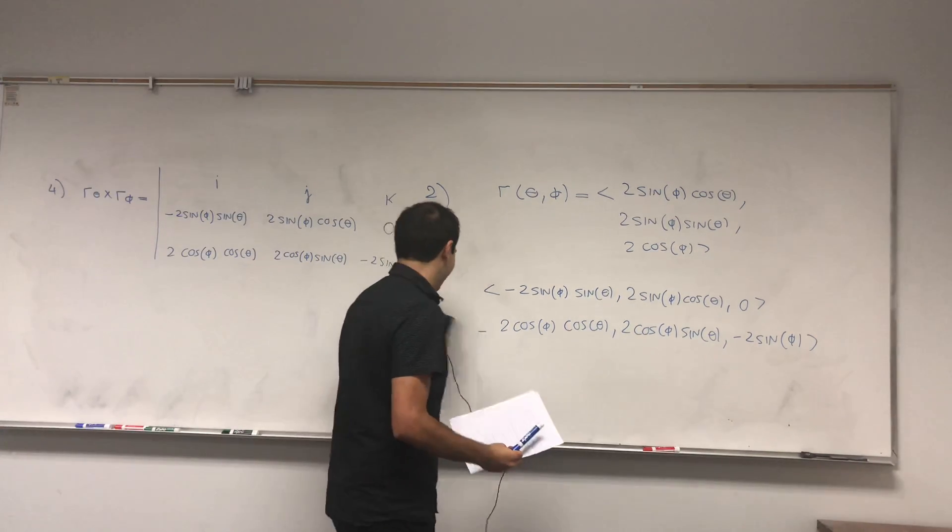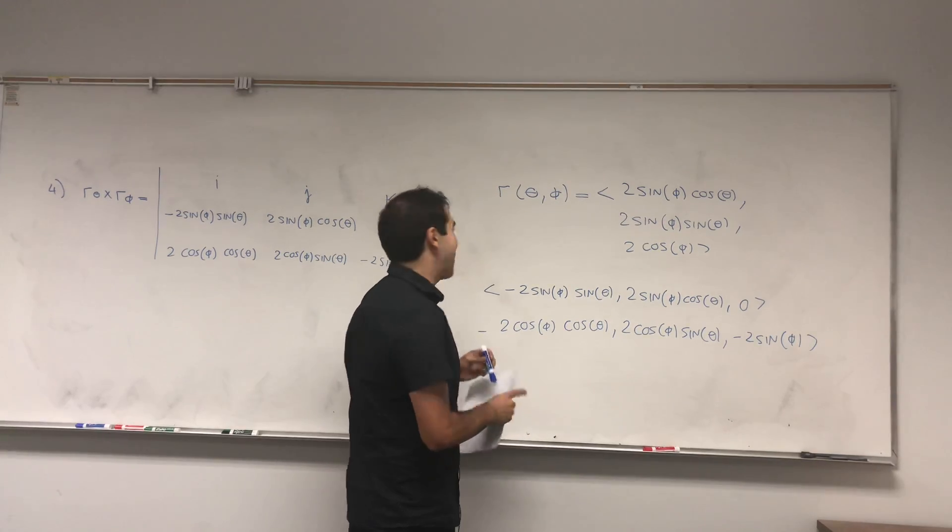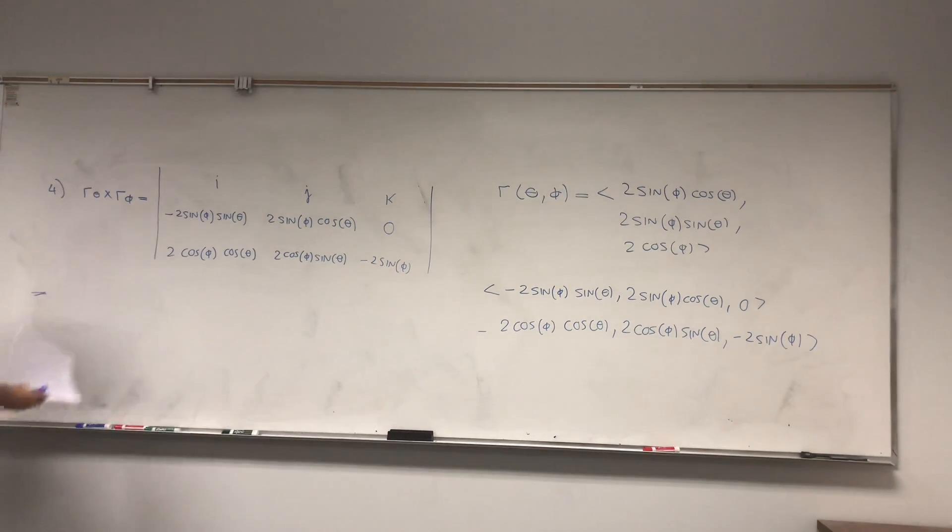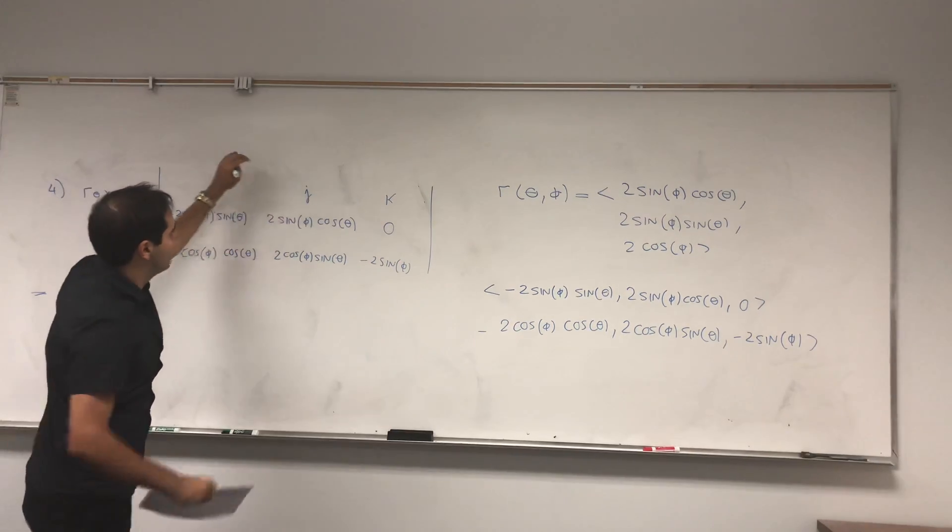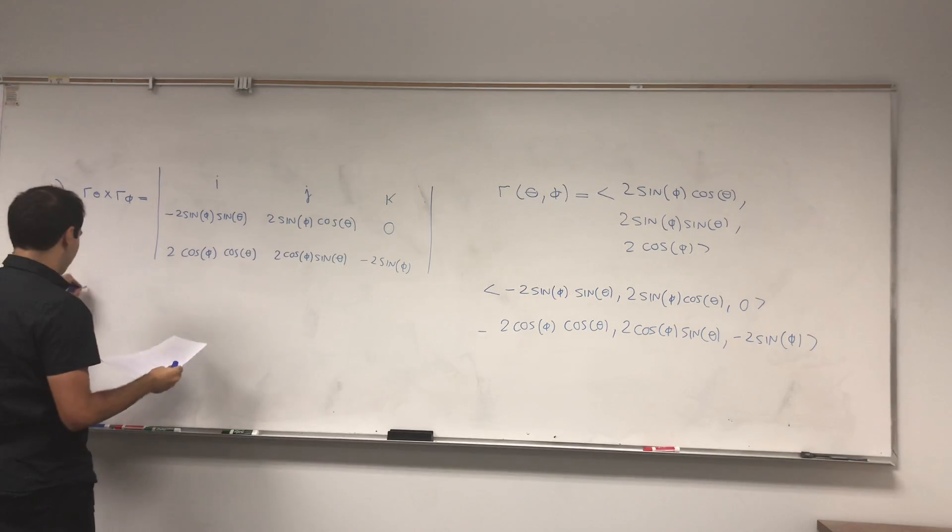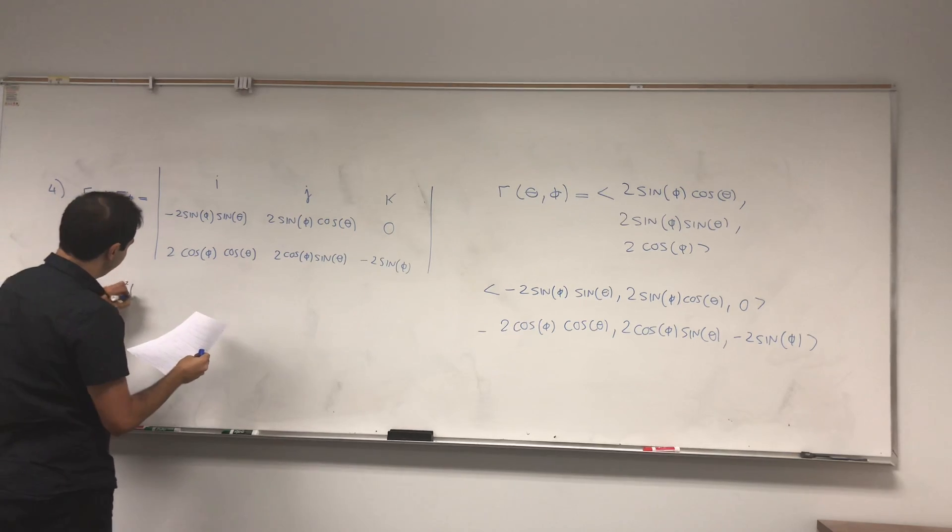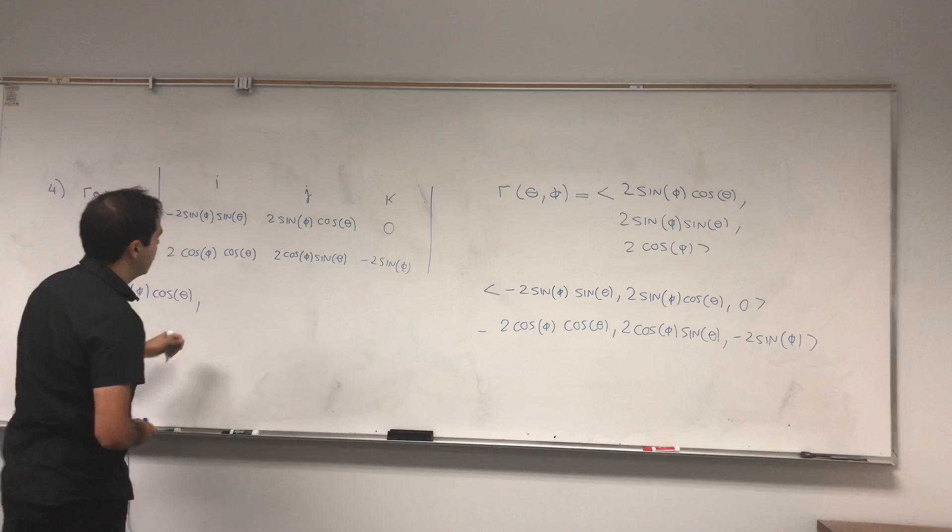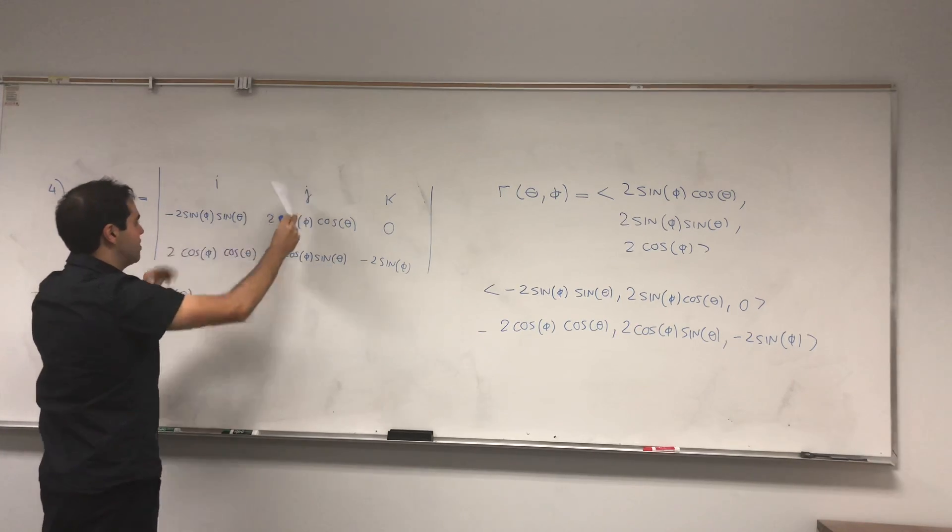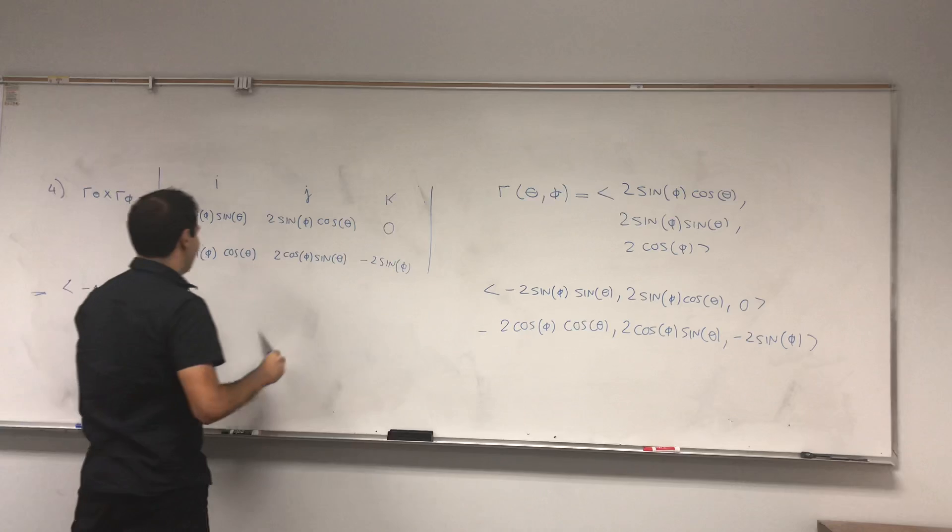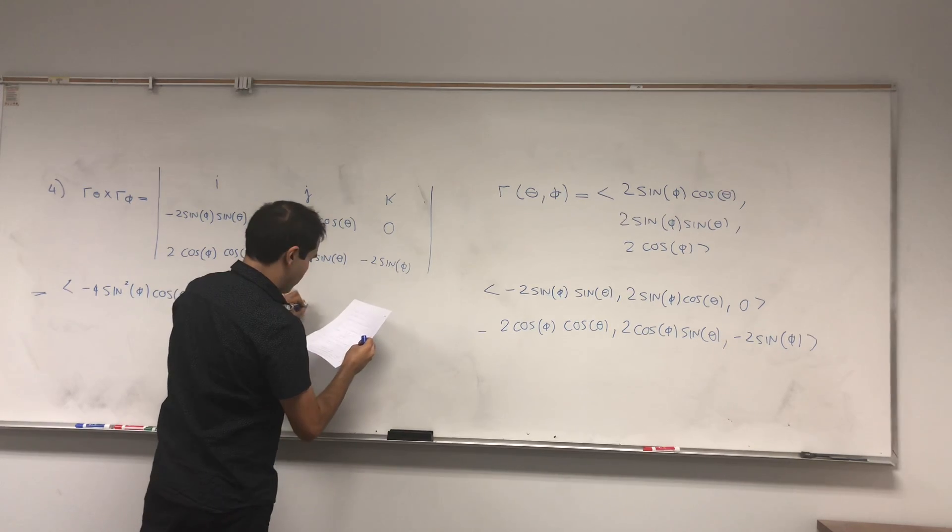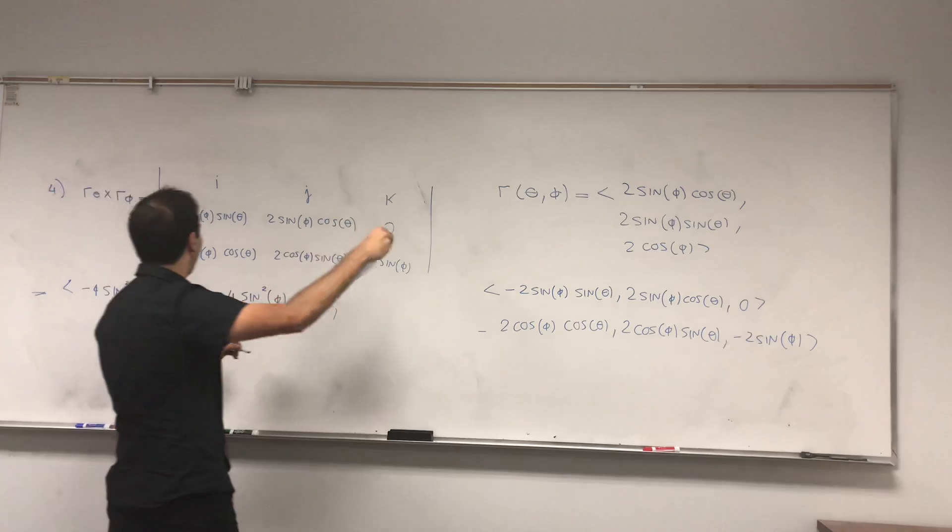What a terrible, terrible thing. But again, we're not scared. We're mathematicians. Hopefully. Hopefully math people are watching this. And you calculate that. So this determinant becomes -2 sin²(phi) cos(theta). So -4 sin²(phi) cos(theta). And lastly, the most awful of them all.